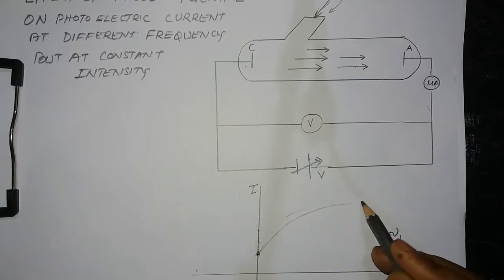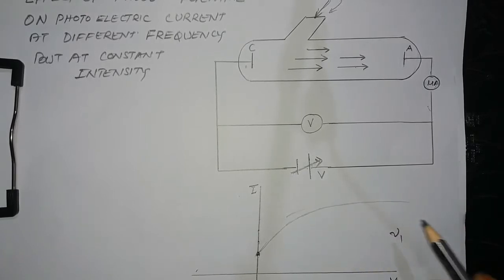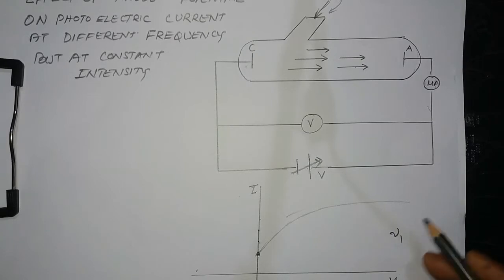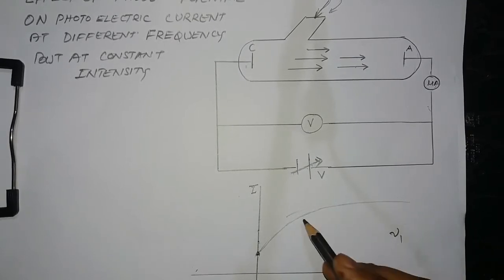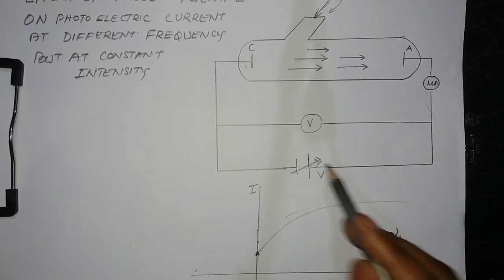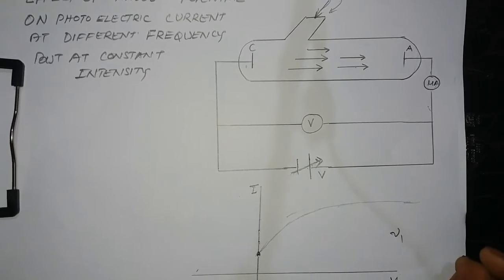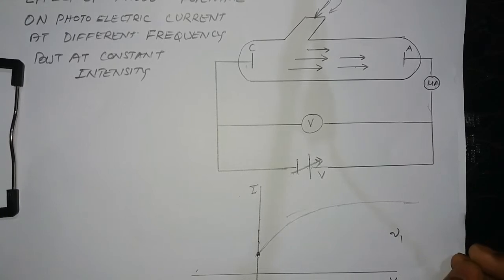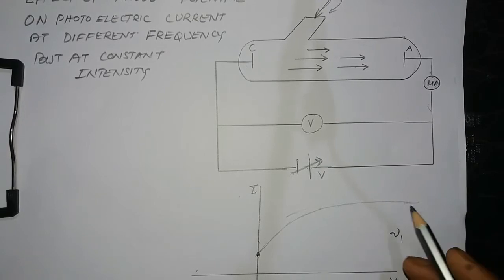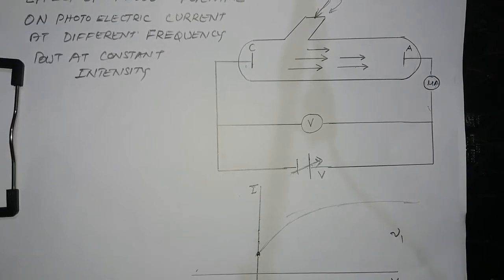The photoelectric current increases and then becomes maximum — it stops increasing further. This maximum value of the photoelectric current is called the saturation current.